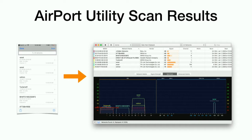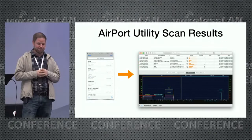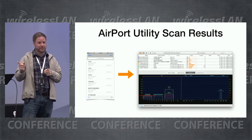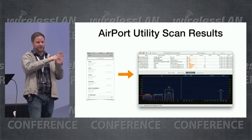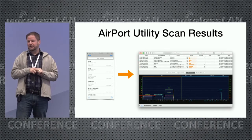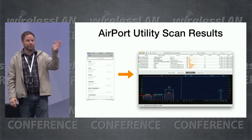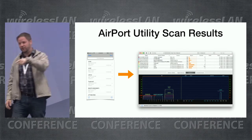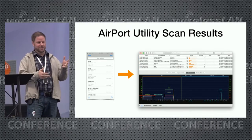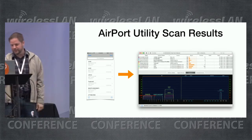This can also be used generically. Nigel — not here this year — wrote a script that scans on a Linux machine and generates the same CSV file format that Airport Utility generates. You can import that CSV into Wi-Fi Explorer Pro, so you can scan on Linux and see the results in the tool as well.